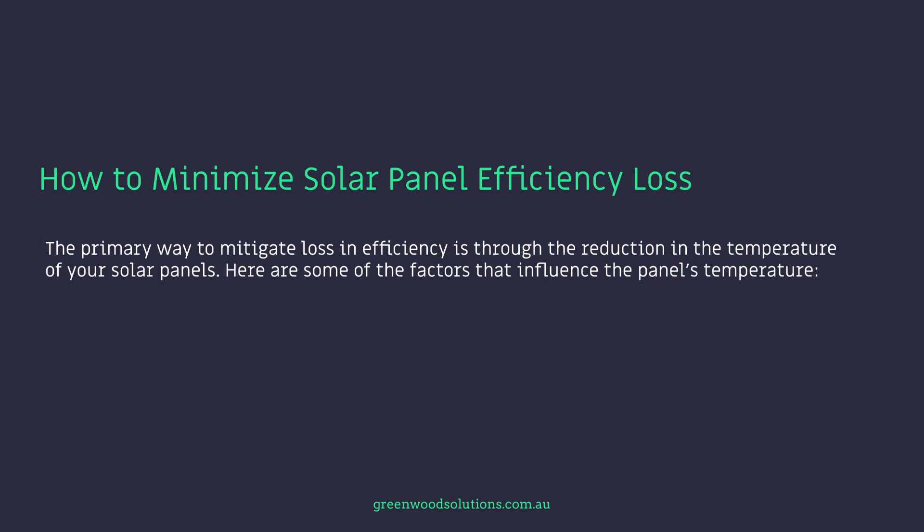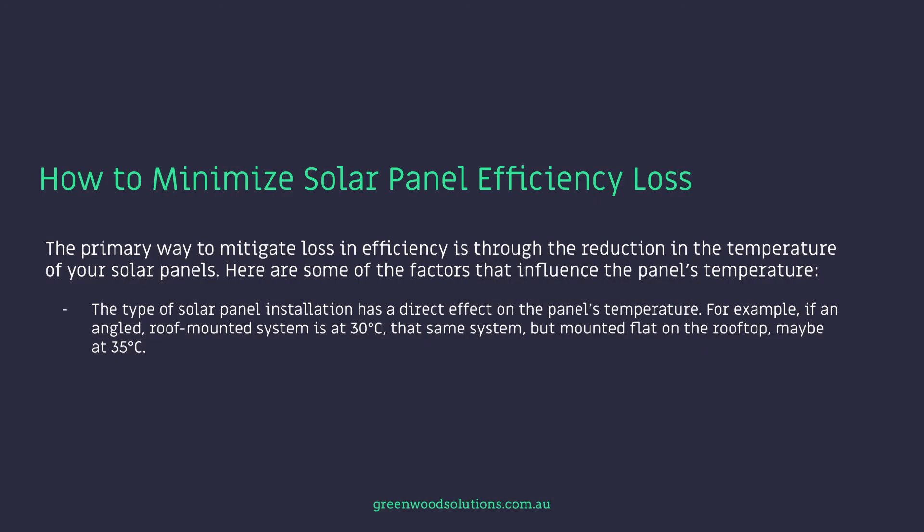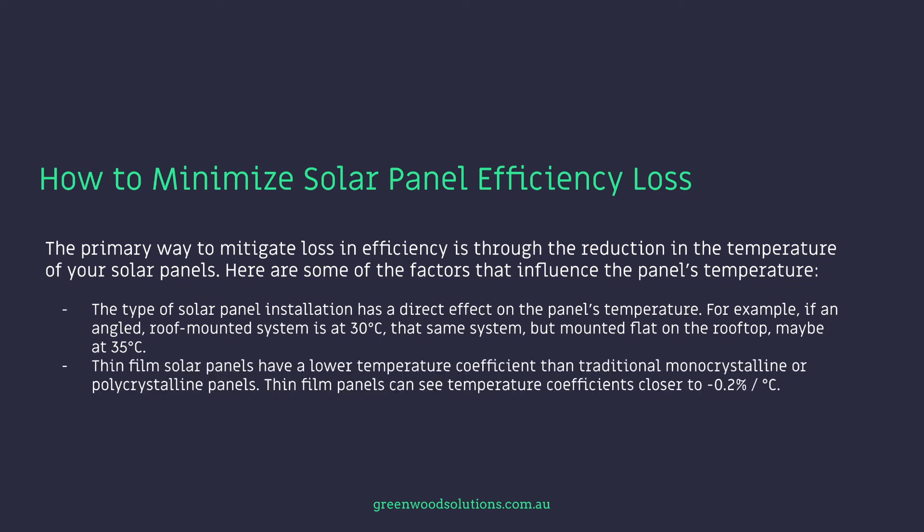The primary way to mitigate loss in efficiency is through the reduction in the temperature of your solar panels. Factors that influence the panel's temperature include where the solar panels are installed and the type of installation. For example, an angled roof mount system at 30 degrees tilt may be at 30°C, while the same system flat to the roof may be at 35°C — a five degree difference. Thin film solar panels have a lower temperature coefficient than traditional monocrystalline or poly panels, with thin film panels seeing temperature coefficients closer to 0.2% per degree centigrade.